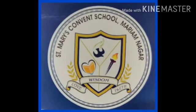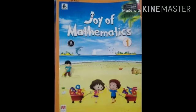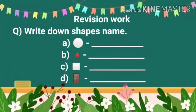Good morning, all of you. Today we are going to revise Joy of Mathematics Class 1 — shapes names. Write down the date in your notebook. Revision work question: Write down the shapes names.